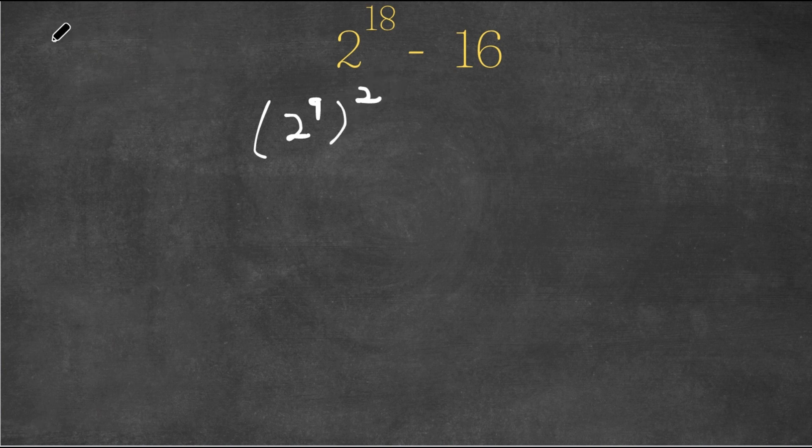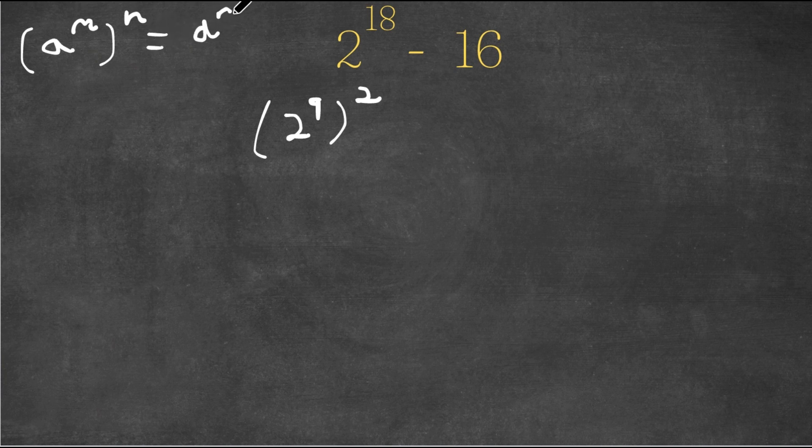Because if I have something in the form A to the power of M to the power of N, this can be written as A to the power of M times N. And the same thing is true, vice versa.